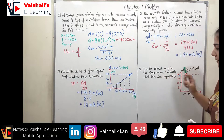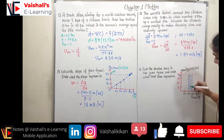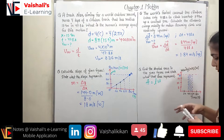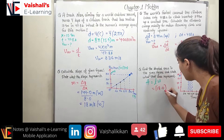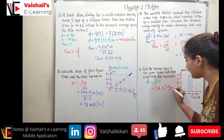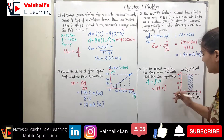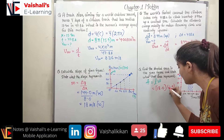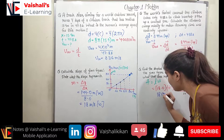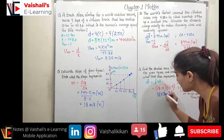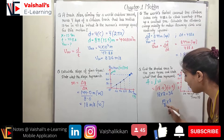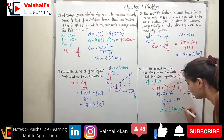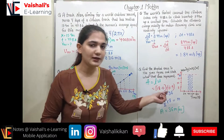Problem 4: Find the shaded area in a velocity-time graph and state what it represents. The shaded area is a rectangle: area = length × width = 18 m/s × (6 − 4) s = 18 × 2 = 36 m west. The area under a velocity-time graph gives displacement, confirmed by the unit: m/s × s = m.